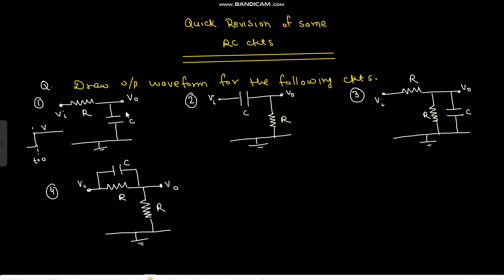Moving on to the first question — this is a very basic circuit. At T equals zero, the capacitor has no charge, so the value of V out at T equals zero is V by R. The initial current is V by R.